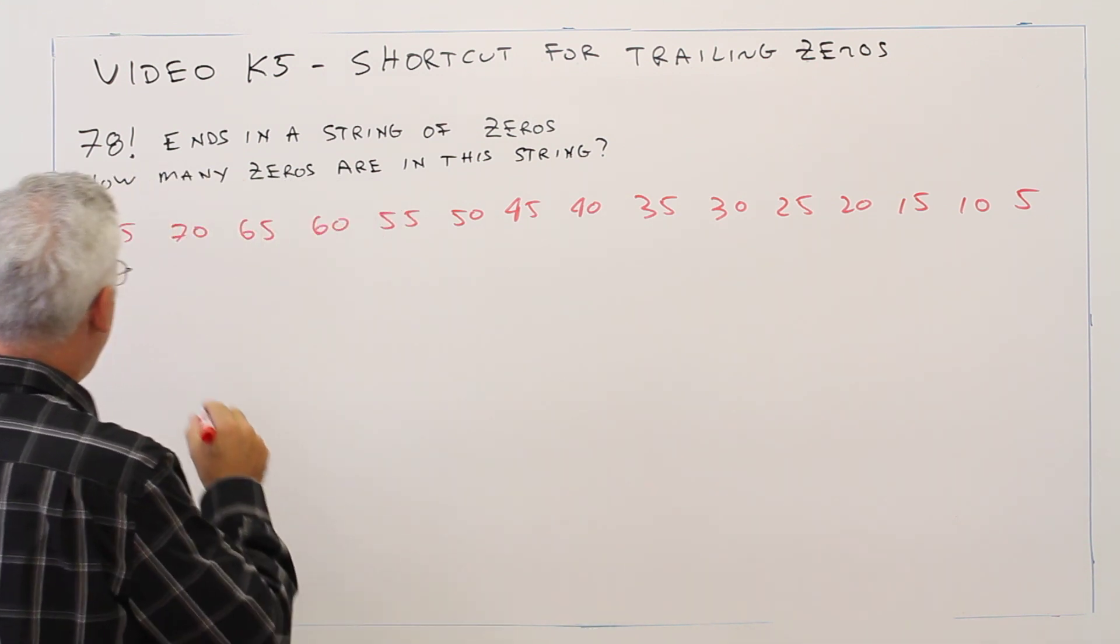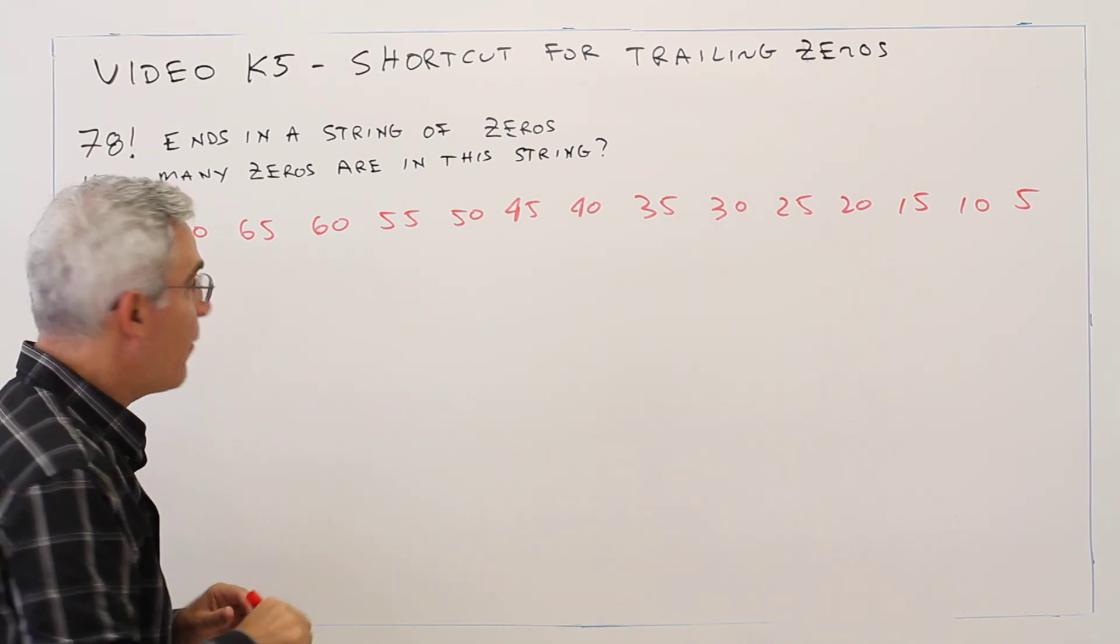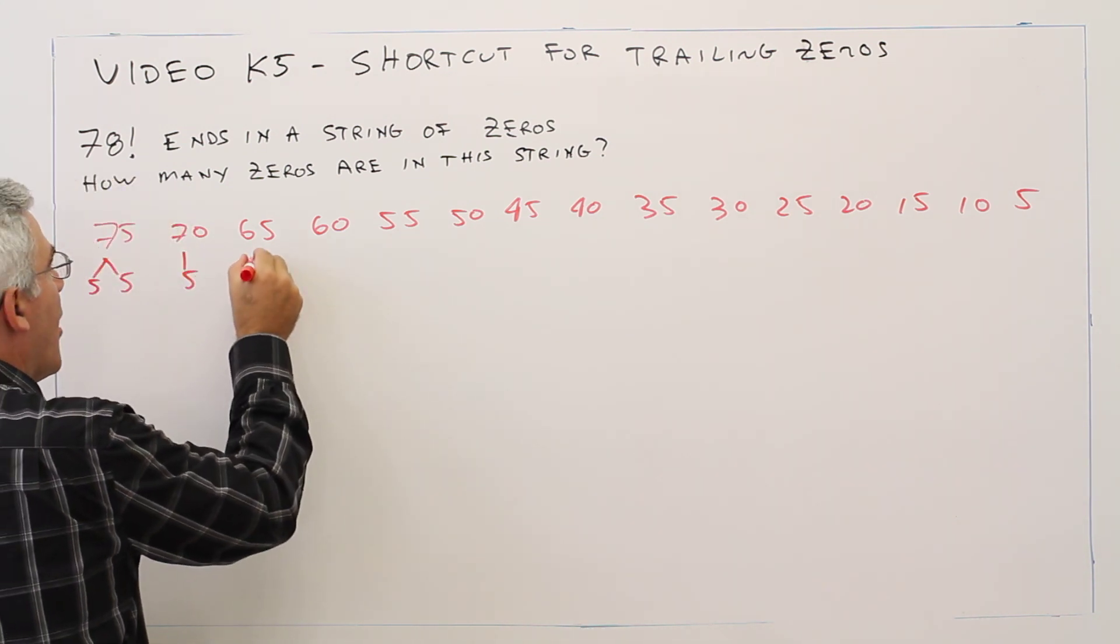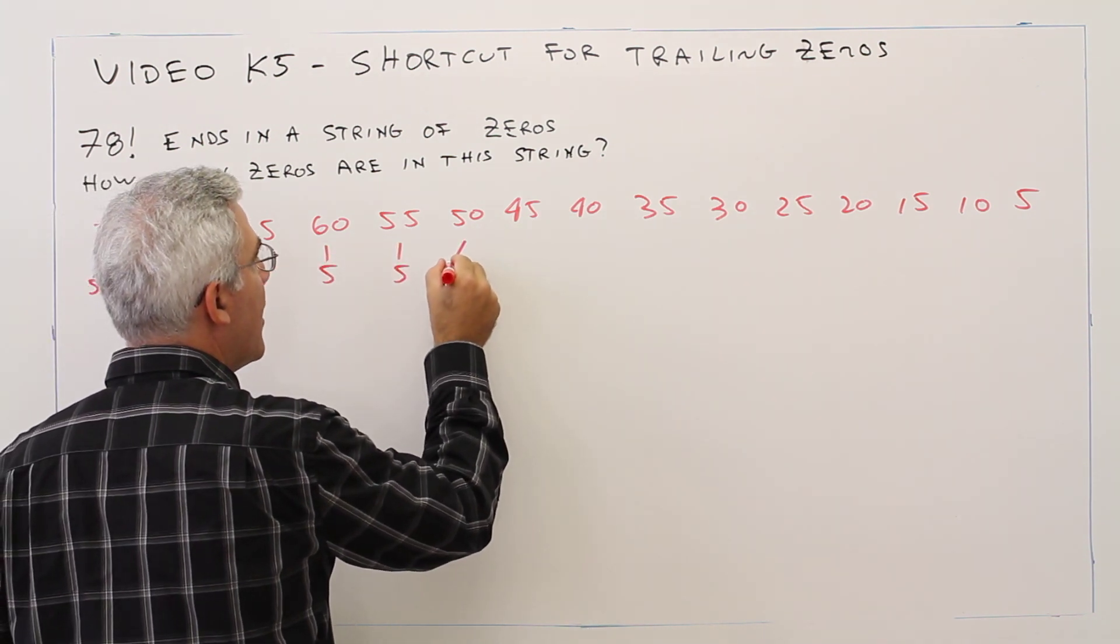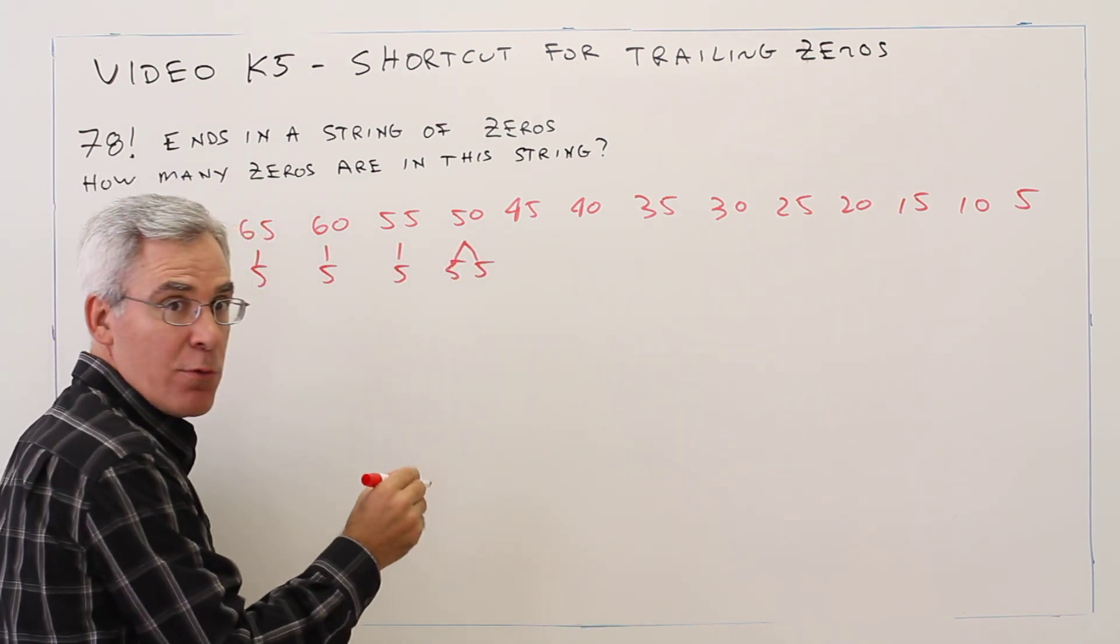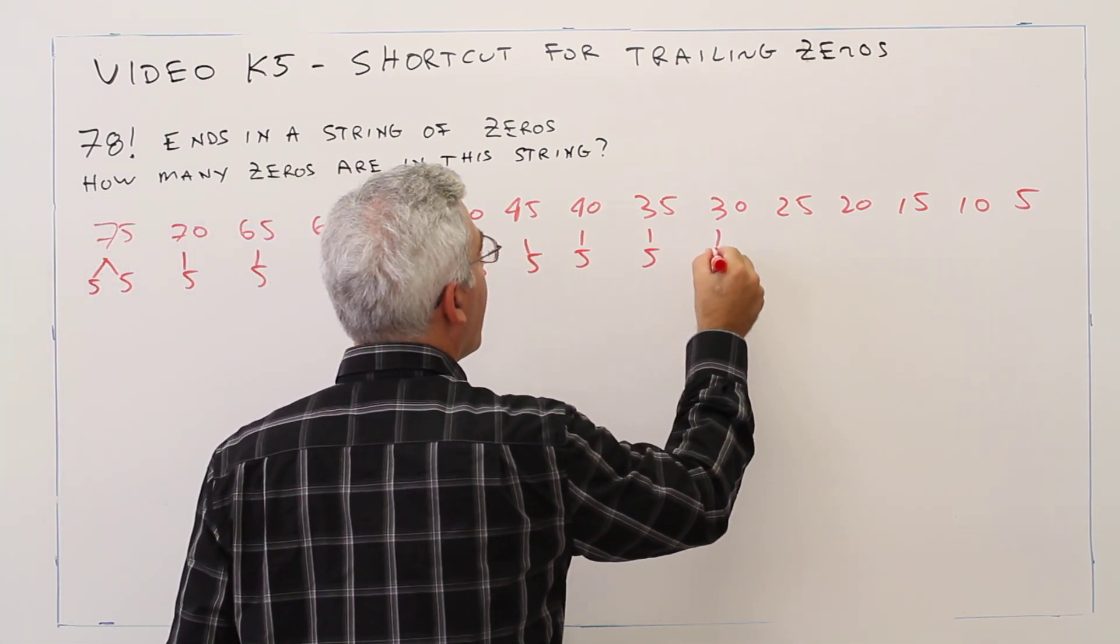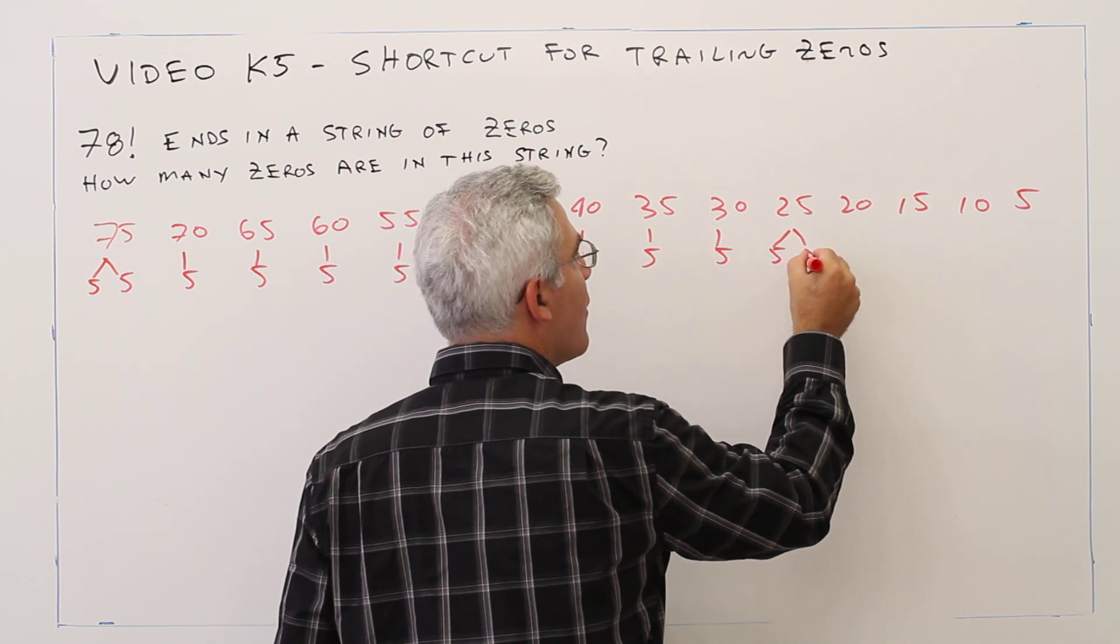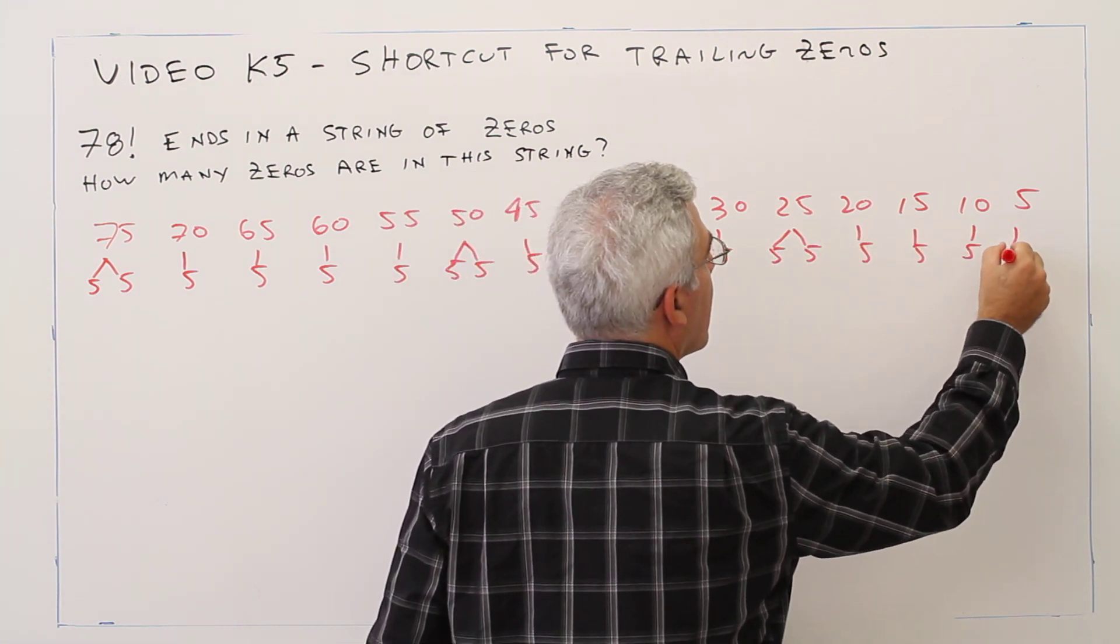So 75 actually has two factors of 5. 70 has 1, 65 has 1, 60 has 1. 50 has two factors of 5. 5, 5, 5, 5. 25 has two factors of 5. 1, 1, 1, and 1.